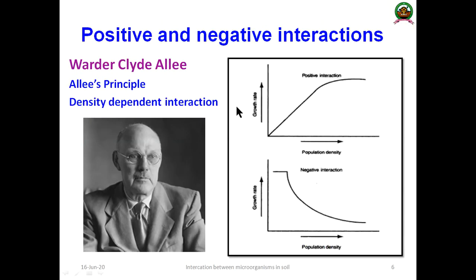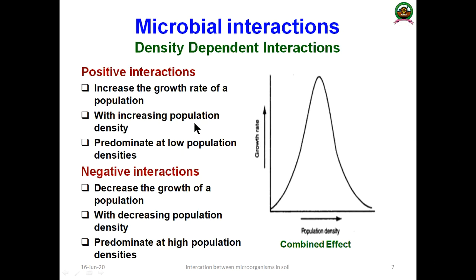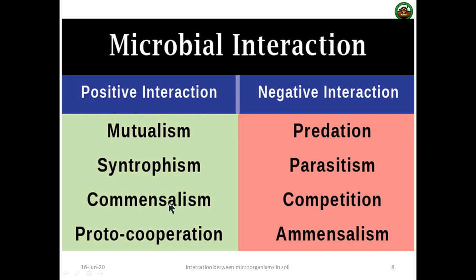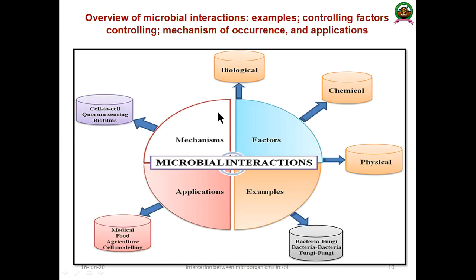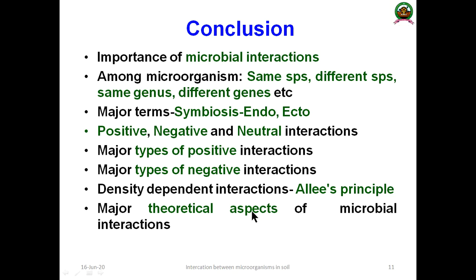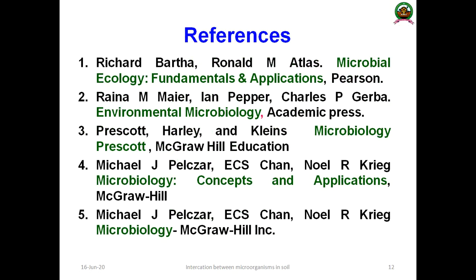In positive interactions, cell growth rate always increases with population density. In negative interactions, growth rate decreases with decreasing population density. This is the density-dependent interaction. We also discussed major mechanisms, factors, applications, examples, and case studies of microbial interactions.